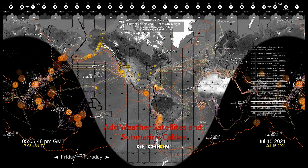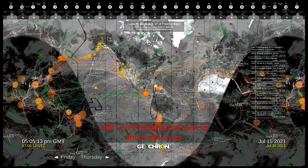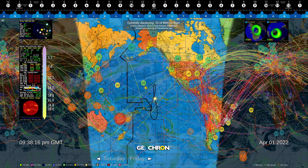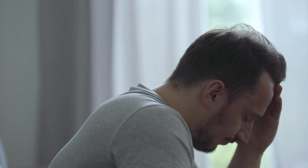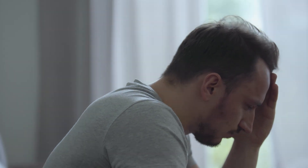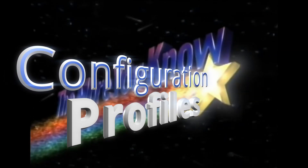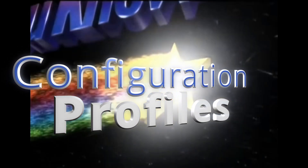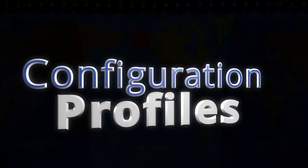Since then, we've added dozens of static and live features, so much so that to see them all at one time is just a mess. If only there was a way to quickly change the layers that you wanted to see. Configuration profiles.